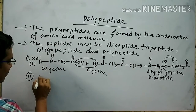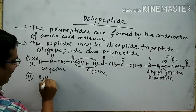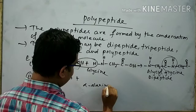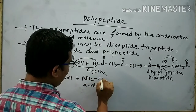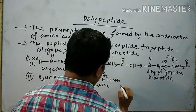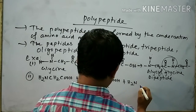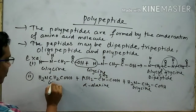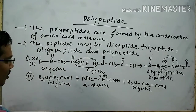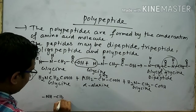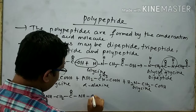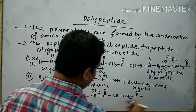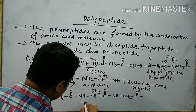When they undergo condensation, there is a loss of a water molecule. The polypeptide which is formed is represented like this. This is said to be a dipeptide. Here this amide linkage is called peptide linkage. The name of this compound is glycine, with the name given by combining the two amino acid names.